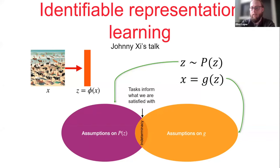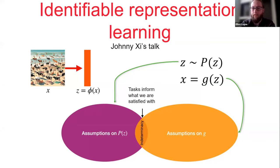To recap the setting of this series of talks, we've been analyzing a framework which Johnny described earlier, where we are considering different sets of assumptions that we can use to identify some low-dimensional latent z when we're observing high-dimensional unstructured x. These assumptions we've split into two categories: assumptions on the distribution of z and assumptions on our generator function g.